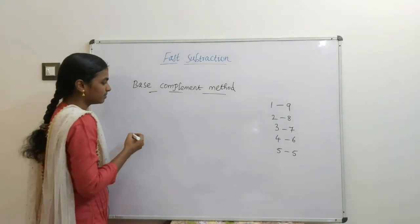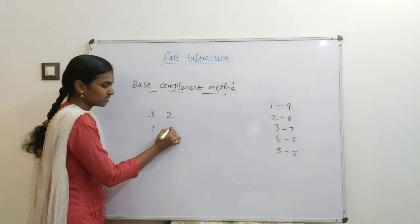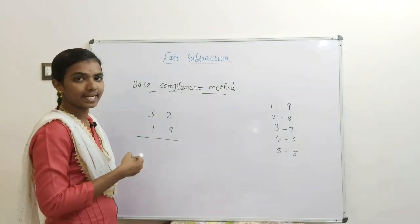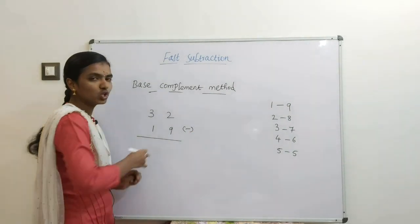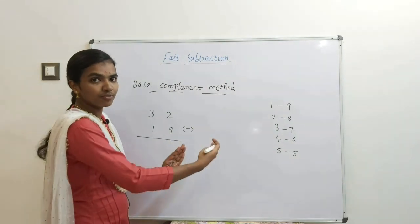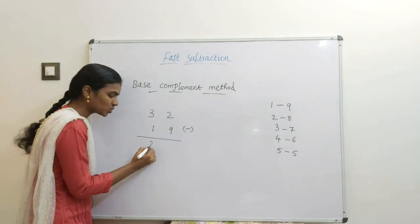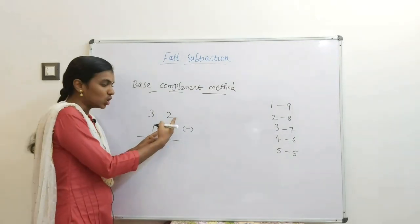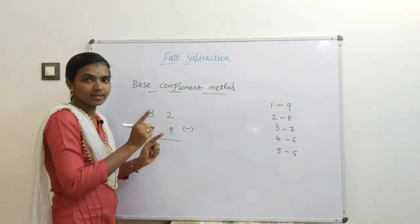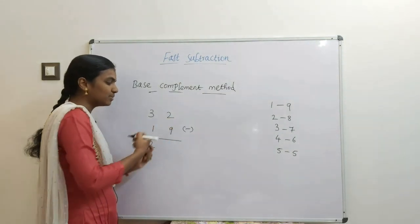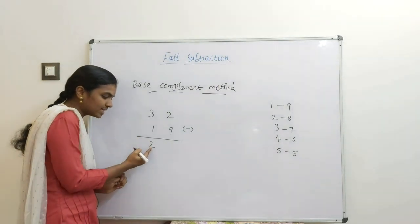Now I will start with a two-digit example: 32 minus 19. In the normal method we subtract right to left, but here I go left to right. So 3 minus 1 is 2. Coming to the next digit: 2 minus 9 — smaller number minus bigger number, we cannot subtract. So we have to reduce one from the left side digit.